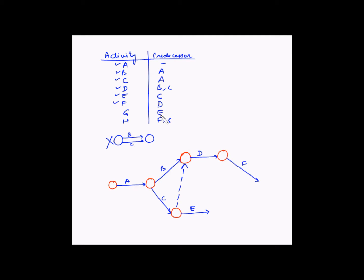Next is G which is dependent only on E. So let's draw this. So this is G. So here we have completed G.